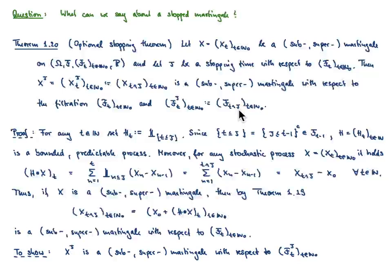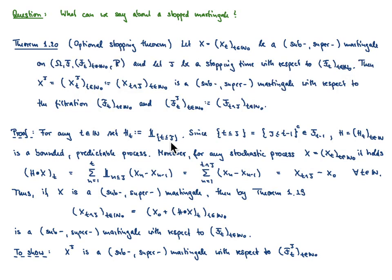I like this proof very much because it uses what we have learned about martingale transforms — that is the tool to prove this theorem. In a first step, for each t we define a random variable H_t, which is simply the indicator function of the event that t is less than or equal to τ.